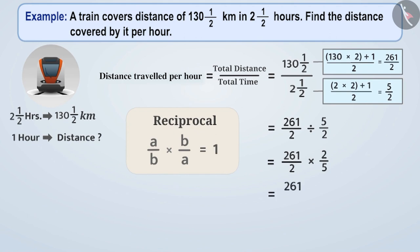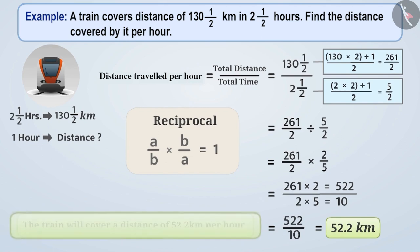We will first multiply the numerators to get the result. Here, 261 into 2 is equal to 522. Then we multiply the denominators 2 into 5 to give you 10. Here, we will get the result 522 by 10 which can be expressed as 52.2. Therefore, the train must be covering a distance of 52.2 km per hour.